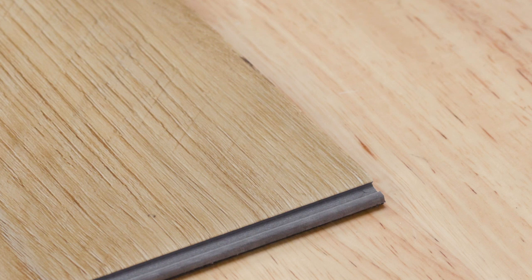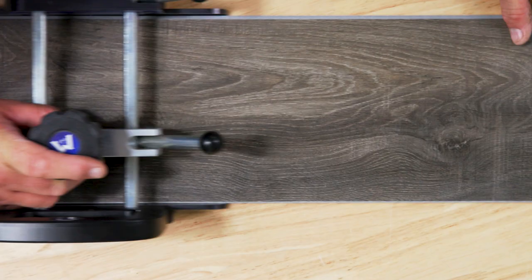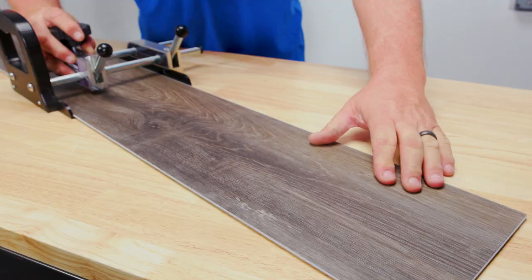Note that the cut edge of the flooring should always be placed along a wall and covered with baseboard, quarter round, or base shoe molding.